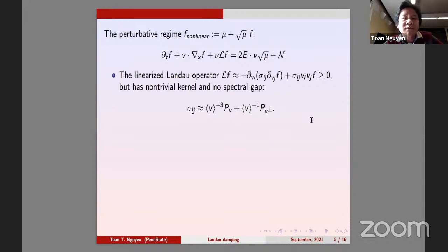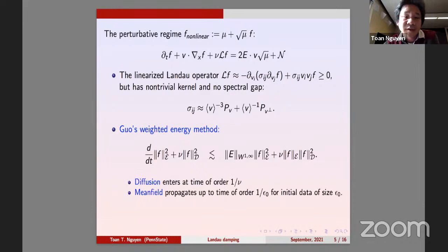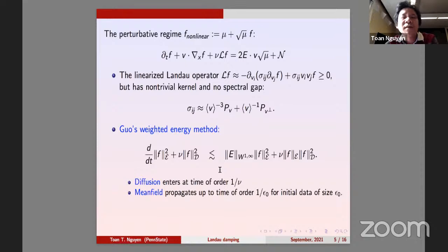Guo introduced a weighted energy method to treat exactly this problem. He derived an energy inequality with energy E and dissipation norm D. You immediately see two things: diffusion enters at time of order one over nu — just like a heat equation — and the mean-field term E dv f has no nu in front, so it propagates only up to time of order one over epsilon, where epsilon is the size of the initial data.